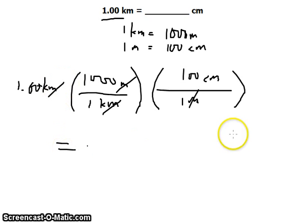If you use your calculator, you would get an answer of 100,000 centimeters. This notation gives us one significant figure, so we need to change that to have three significant figures.